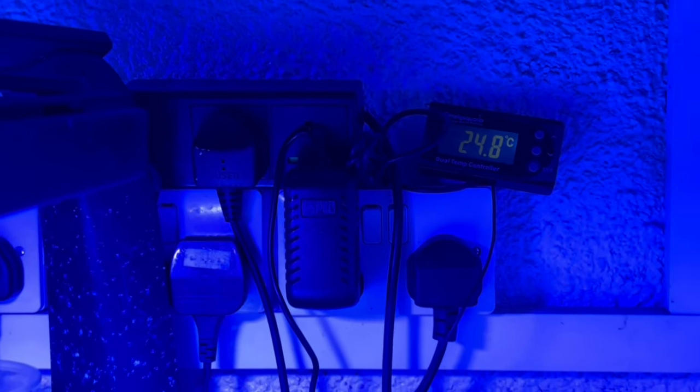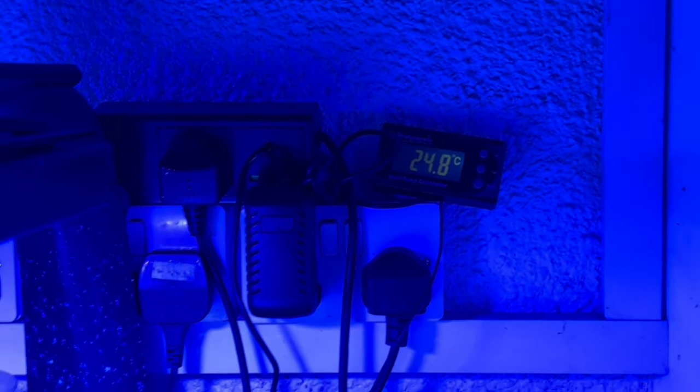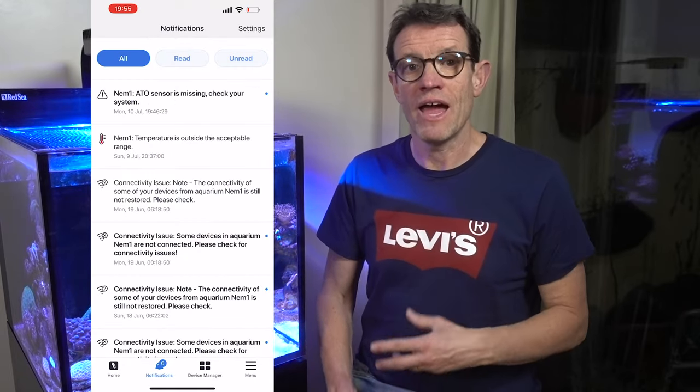You set the high level of temperature and the lower level of temperature and if it goes outside of that range, you have an audible alarm. So the downside of that is if you're out of the house. But what I would say, I use that in conjunction with the Red Sea 3-in-1 auto top off. It works perfectly.